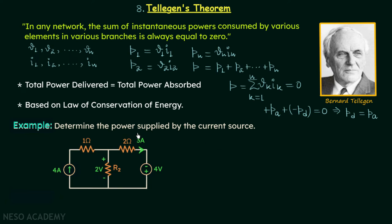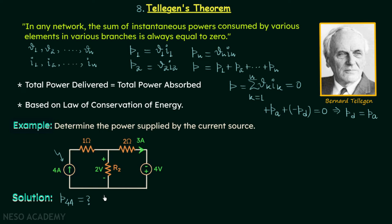Now we are going to solve one example problem. We are required to determine the power supplied by the current source, and for this purpose we will use Tellegen's theorem. In this network we have five elements, and we will focus on calculating instantaneous powers for all five elements one by one. The first element is our current source — let's say the power delivered by this source is p_4A, which we need to find.